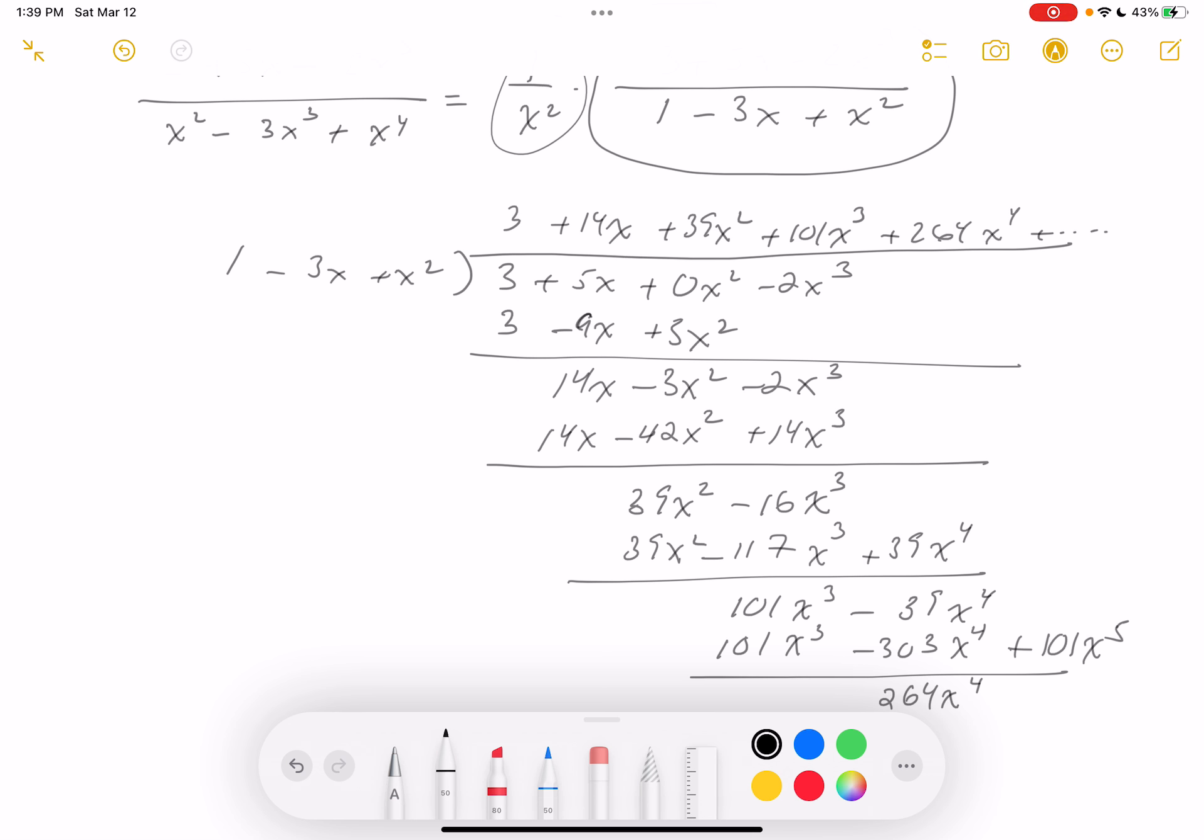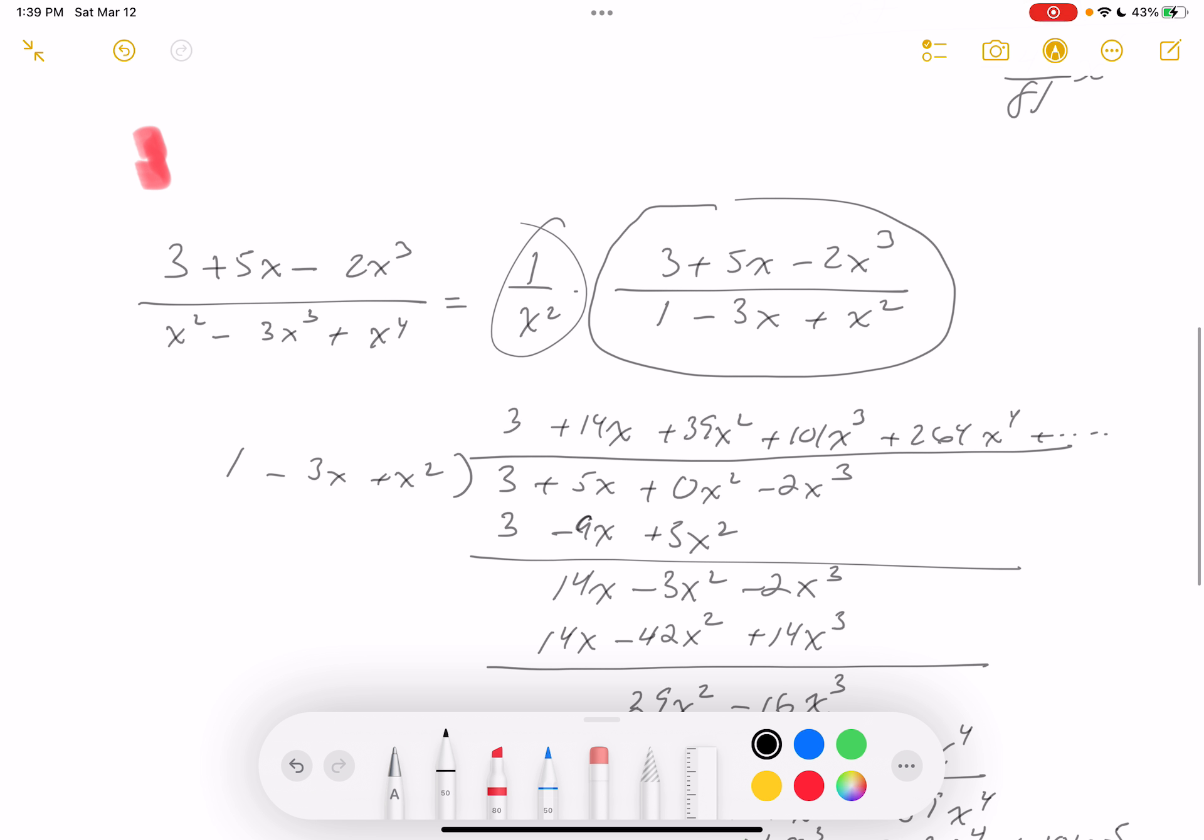So somebody says, are you done? No, we're not done. What we have to do is multiply that by 1 over x squared. So it's going to be 1 over x squared times that thing we just found.